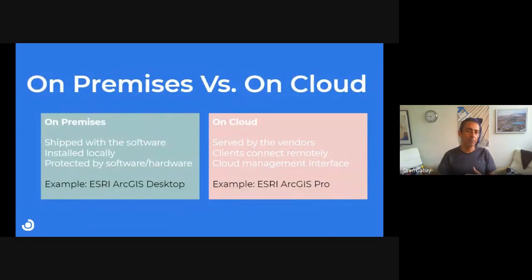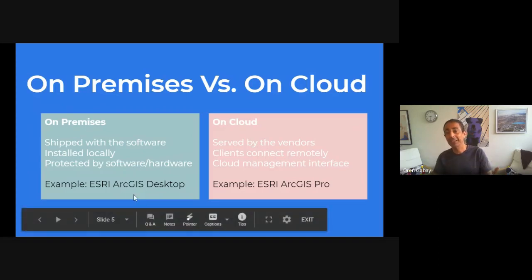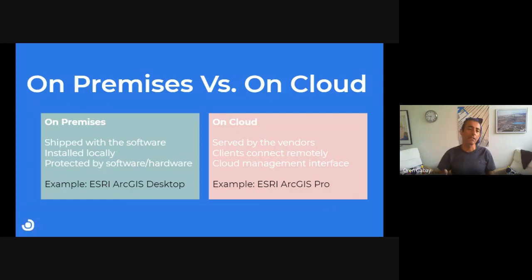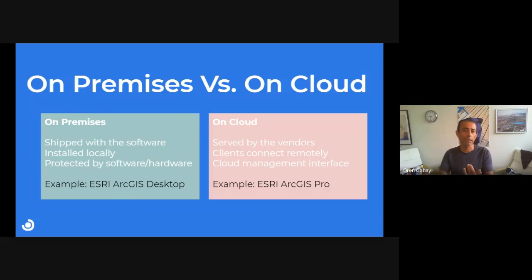A license manager can be on-prem or on-cloud. On-prem: you get it with your software, install it locally on the network, and it's typically protected by some kind of encryption. An example is ESRI ArcGIS Desktop, licensed this way for many years using FlexNet. On-cloud is similar but usually not the same technology — the vendor provides the server on the internet, clients connect remotely, identify themselves by customer and username, typically by email, and they get the license over the internet.